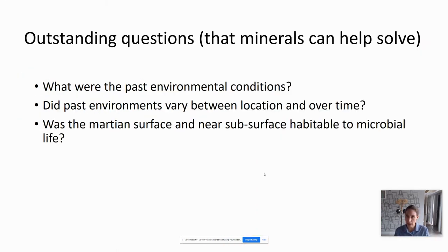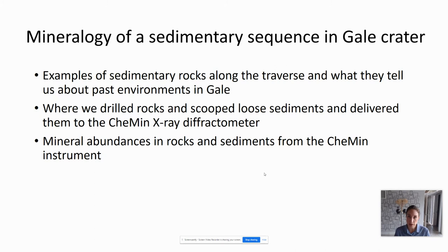There are many outstanding questions about the surface of Mars that we can use minerals to help solve: What were the past environmental conditions on Mars? Did they vary between location and over time? And was the Martian surface or near subsurface habitable to microbial life? We're starting to answer some of these questions using the Curiosity rover studying a sedimentary sequence in Gale Crater. I'll show you examples of the sedimentary rocks along the traverse, what they tell us about depositional environments, and the mineral abundances determined from CheMin.